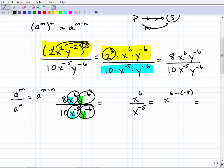So this here would be x to the, now six minus minus five. So this would be six minus minus five is going to be plus five. So this would be x to the 11th power.